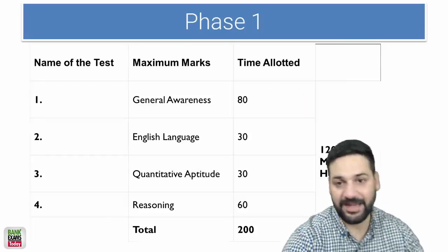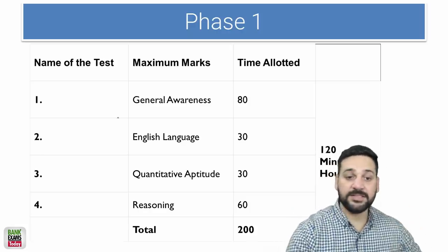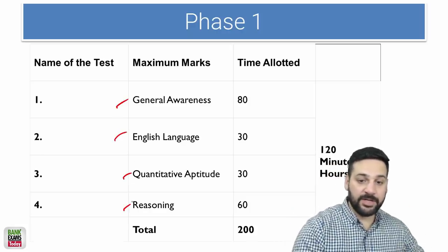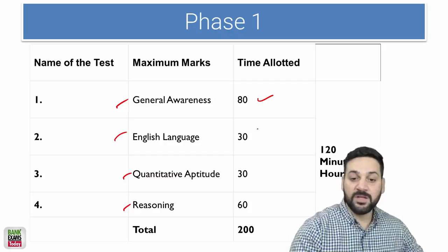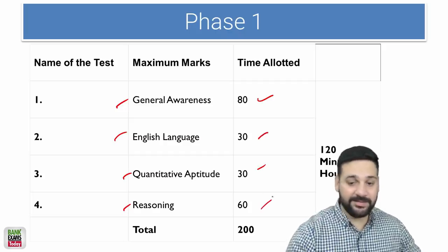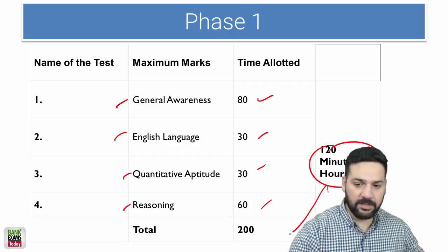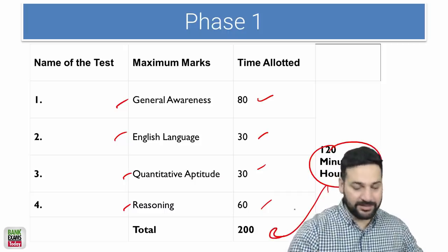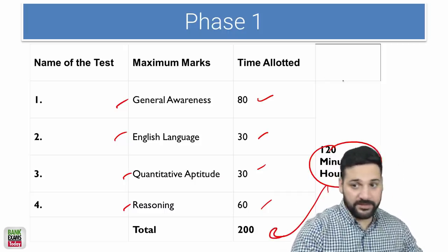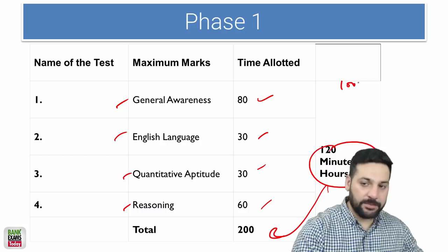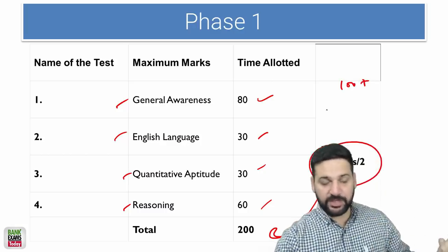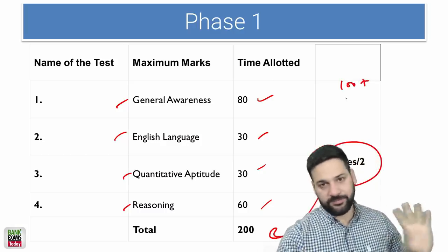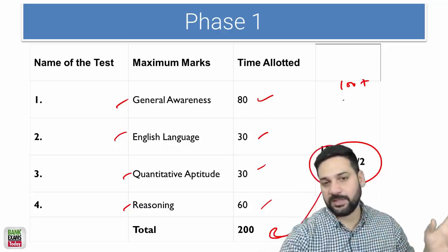Now this is the exam pattern for Phase 1: general awareness, English language, quantitative aptitude and reasoning. 80 marks for GA, 30 English, 30 quant and 60 reasoning, 120 minutes and 200 marks total. If the paper is easy the cutoff can go beyond 100 plus. If it is very difficult it will be around 75. It all depends upon the difficulty level of the exam.